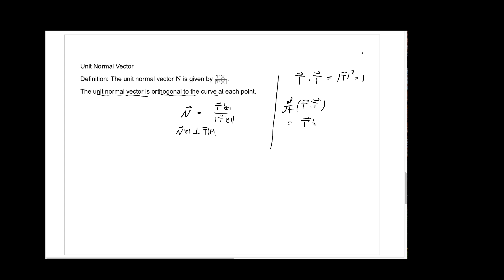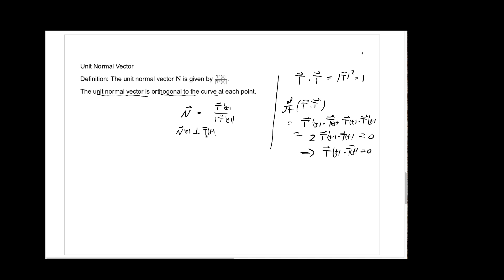We get T prime(t) dotted with T(t), plus T(t) dotted with T prime(t) — which is exactly twice T prime(t) dotted with T(t). But T dot T is the constant 1, so its derivative is zero. Therefore this expression must equal zero, which tells us T prime(t) dot T(t) equals zero — so T prime(t) is orthogonal to T(t). The unit normal vector N is just a scalar multiple of T prime, so it is also orthogonal to the tangent vector.